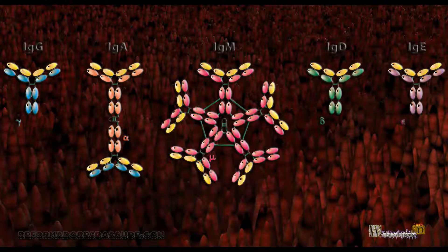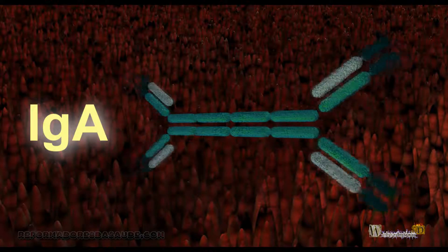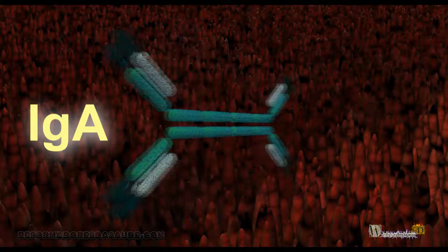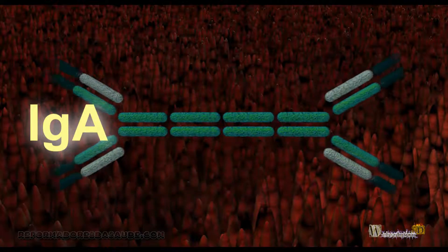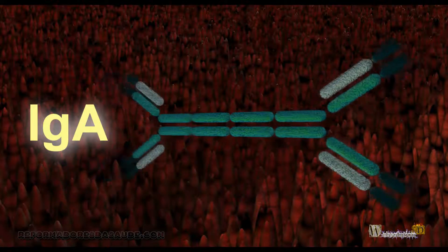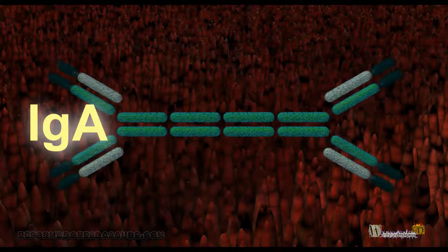Immunoglobulins, also called antibodies. The most outstanding ones are immunoglobulin D (IgD), immunoglobulin G (IgG), immunoglobulin A (IgA), and immunoglobulin E (IgE). The IgA has two subclasses, IgA1 and IgA2, and can be produced in monomeric and dimeric form. The dimeric form of IgA is the most prevalent and is also called secretory IgA.